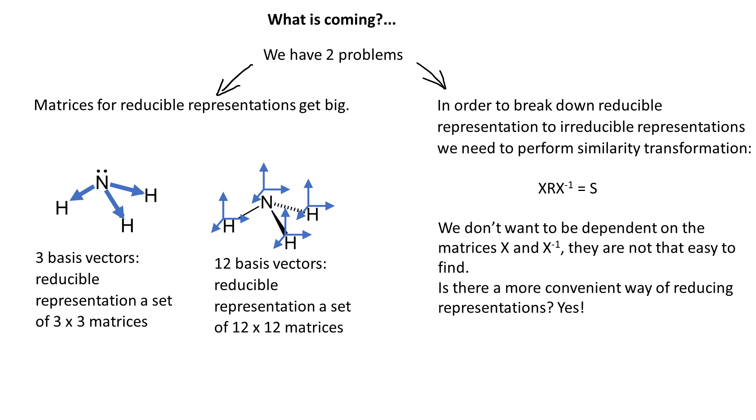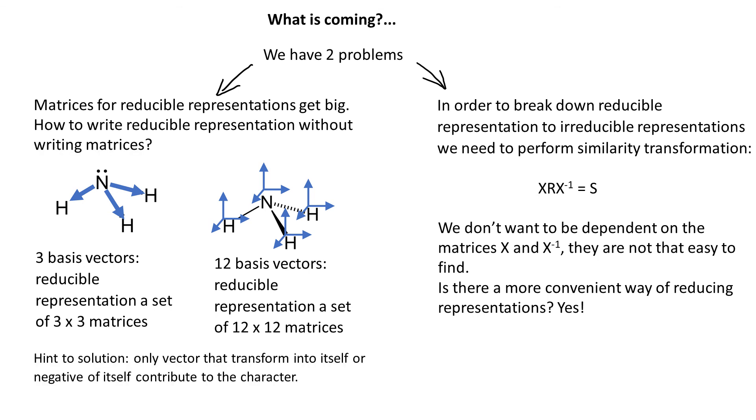But if we choose to anchor vectors x, y and z into each of the atoms of ammonia molecule, that will lead to a set of matrices which are 12x12. The answer to this issue is quite straightforward,